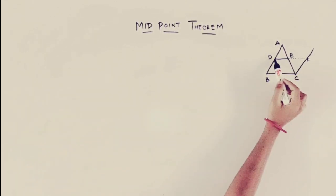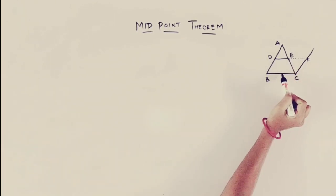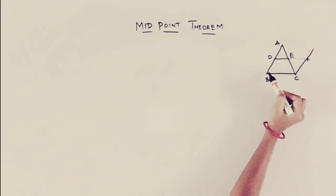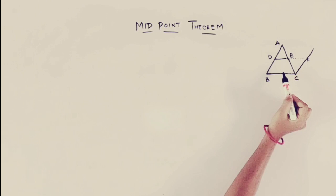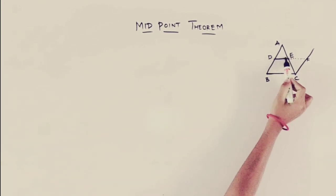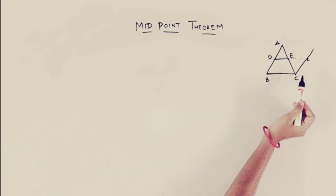Two sides are divided at their endpoints — midpoints. The line joining them divides the third side as parallel. This is the final step: BC is parallel, and DE is equal to half of BC. Prove.